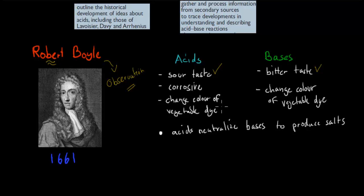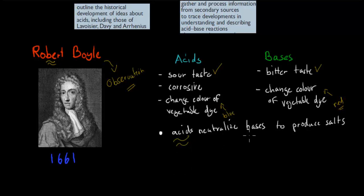For example, a dye might change to blue for acids and to red for a base, or just generally a different color for acids and bases. And when you have acids and bases together, they seem to be opposites — if you put them together, they neutralize each other. That's what Robert Boyle discovered, and these were just observations; he didn't put out a theory as to why this was the case.